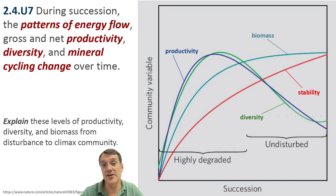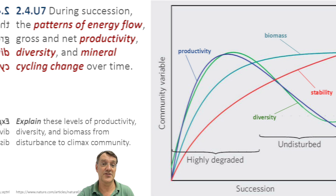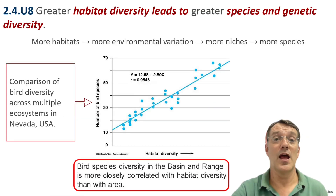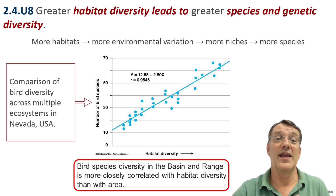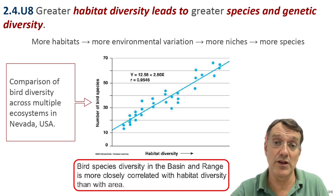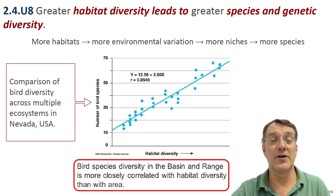During succession, several ecosystem properties change predictably. This graph shows how productivity, biomass, stability, and diversity all change over time following a disturbance. Note that productivity peaks relatively early in succession, while stability continues to increase throughout the process. Greater habitat diversity leads to greater species and genetic diversity because more diverse habitats provide more environmental niches that can support more specialized species. The graph shows a strong positive correlation between habitat diversity and bird species diversity found in Nevada.